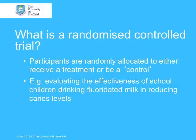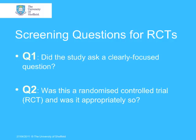A randomised control trial is a study design used to evaluate the effectiveness of an intervention. The screening questions in the CASP checklist for randomised control trials start with question one: did the study ask a clearly focused question? When reading the paper, did you understand what the trial was aiming to do? The second question is: do you think it really was a randomised control trial, and was it appropriate to use one to answer the study question?